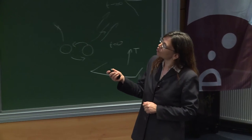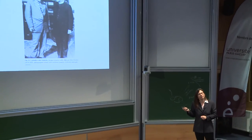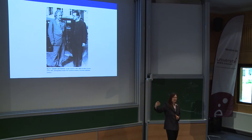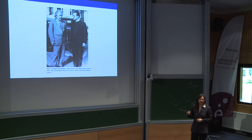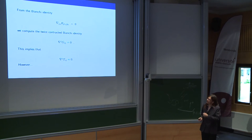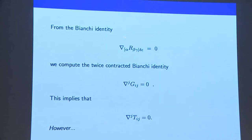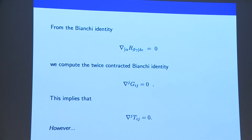We can look at the Bianchi identity and apply it to the Riemannian curvature tensor. Taking the twice-contracted Bianchi identity gives an equation on the left-hand side of the Einstein equations, and this implies by the Einstein equations themselves an identity. People at the beginning thought: is this energy conservation? It makes sense of some sort, but to call this energy and energy conservation is probably the wrong thing to do in GR.